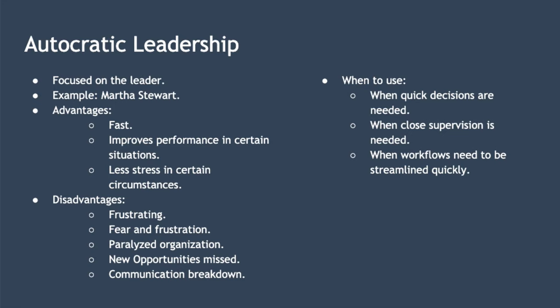The first style we're going to look at is autocratic leadership. This style of leadership is centred around and focused on the leader. All decision-making resides with the leader, and decisions are made without much or sometimes even any consultation with subordinates. An autocratic leader will reach a decision themselves, communicate it with their team, and expect the team to execute with no questions asked.